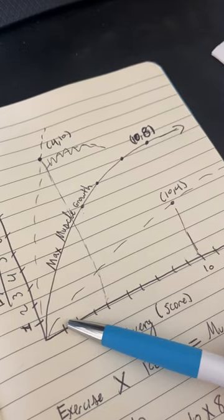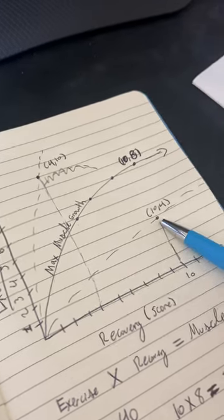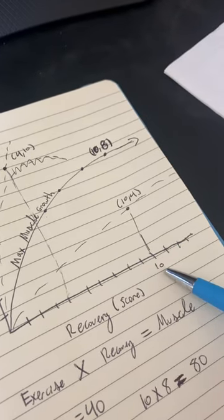This bottom line here is gonna represent, we named it as the Alex Eubank line. And so let's say you only worked out at an exercise intensity of four, you can recover very well from it, a 10 out of 10.